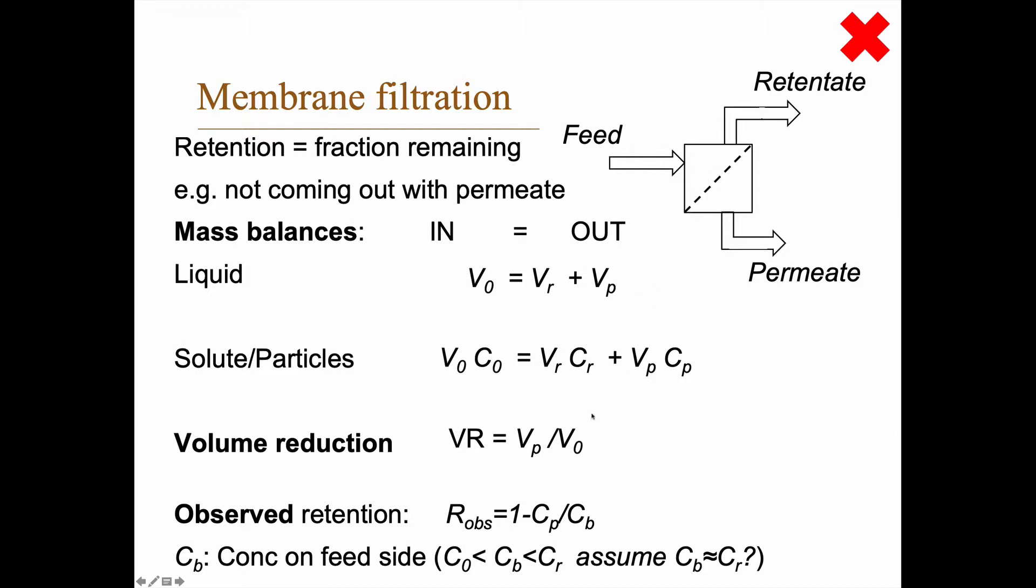Depending on the setup, we might have different cases, and we will often assume that Cb actually equals Cr, because we will assume that there is a feedback thing going on here. So the retentate goes multiple passes across the membrane before finally getting out.